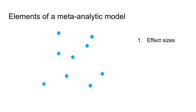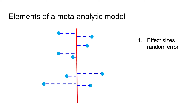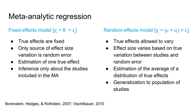First of all, the effect sizes found in an individual study go into the model as dependent variables. For each effect size we assume a random measurement error component that makes individual effect sizes deviate from the true mean. What was just shown is an illustration of a fixed effects model, where the true effects of each study are fixed and the only source of effect size variation is a random error.